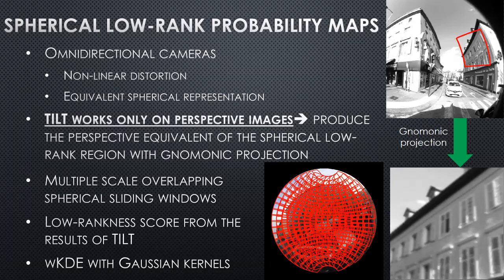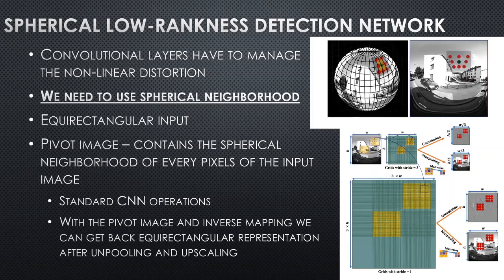From the results of TILT, we can calculate a low-rankness score, and these values can be propagated over the whole image with weighted kernel density estimation using Gaussian kernels. However, this method takes a lot of time and resources, so we wanted to create a more efficient way of low-rankness detection — and so we created a spherical low-rankness detection network.